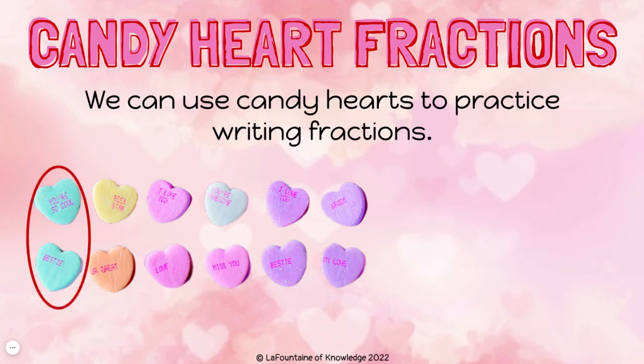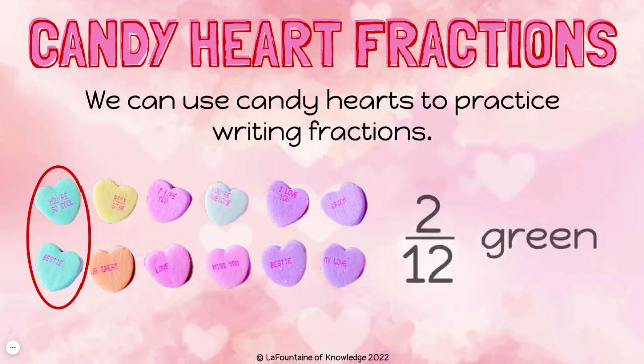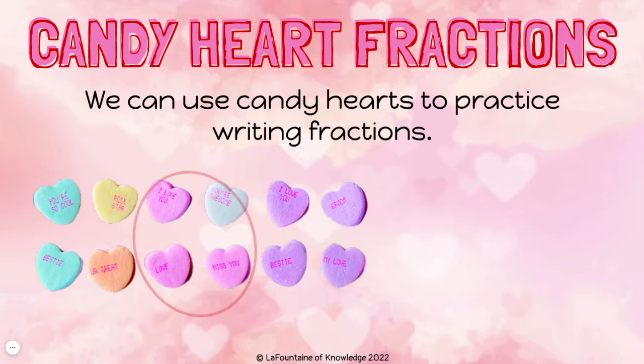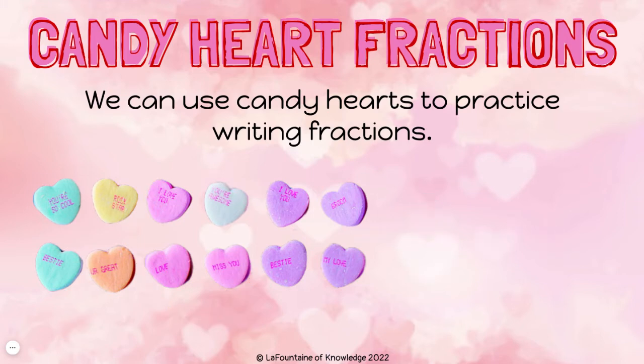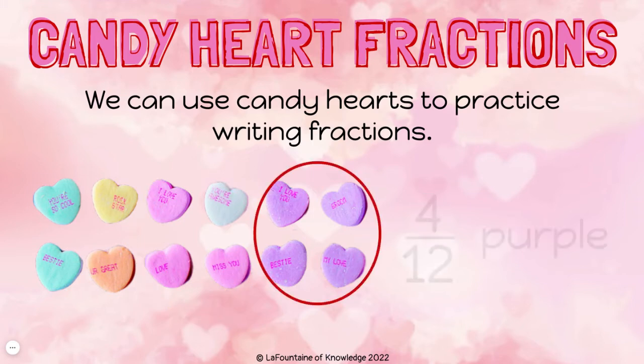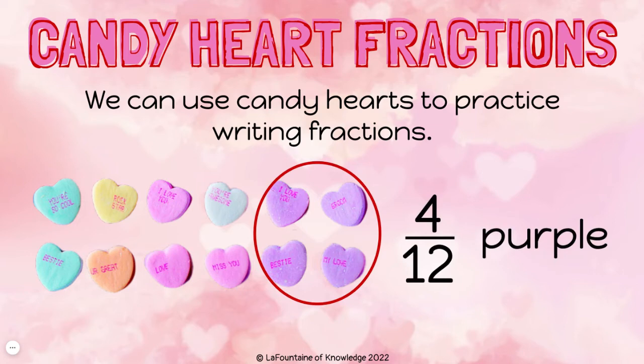I have two green candy hearts, so two out of twelve, or two twelfths, of my candy hearts are green. I have three pink — three twelfths are pink and four twelfths are purple.